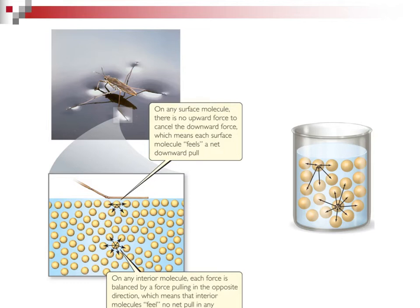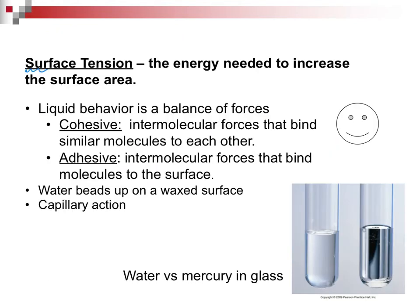The second property to think about is surface tension. Some insects can actually walk on water — why is that? Something happens at the surface of water. A given particle can be attracted to other particles, putting a kind of skin on it. In a beaker, you can see how individual molecules, through intermolecular forces, are attracted to one another.